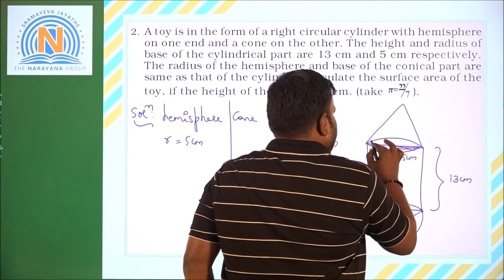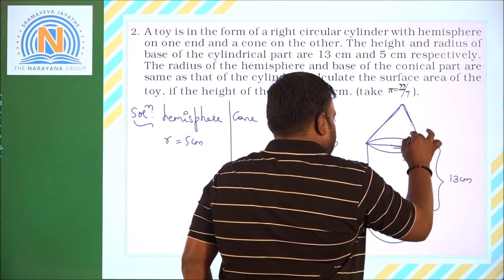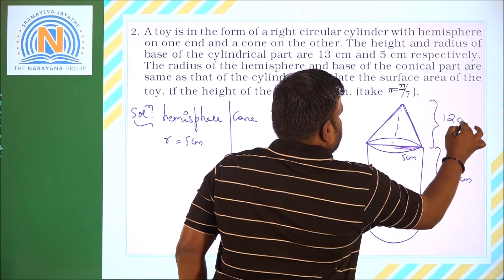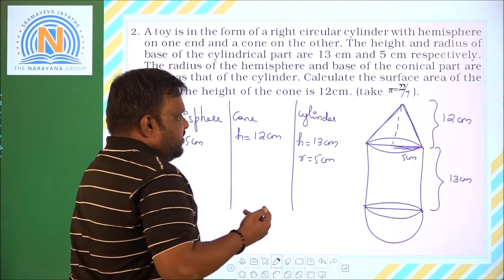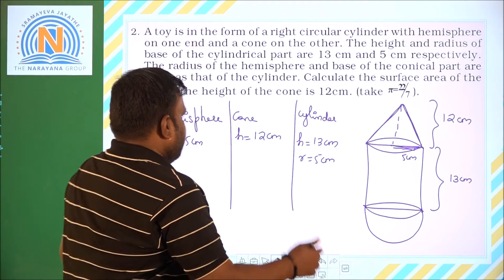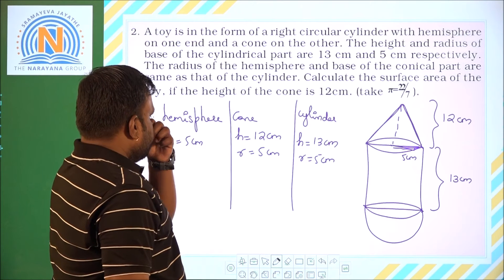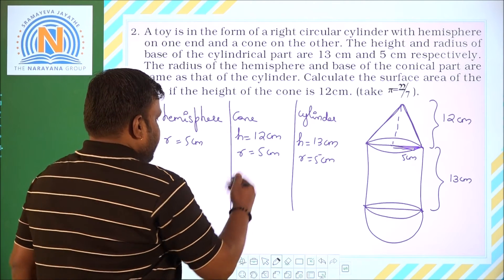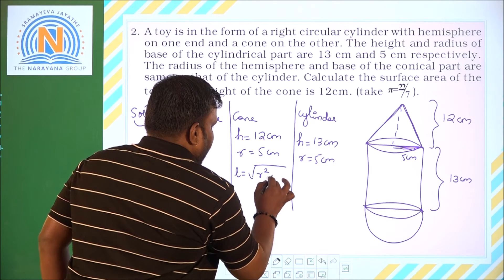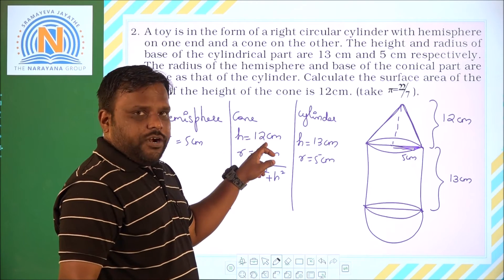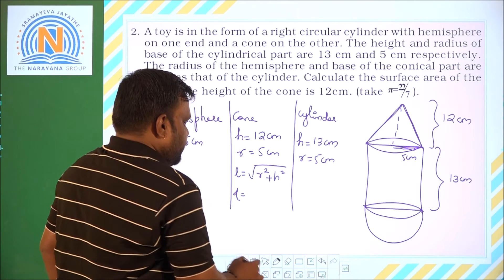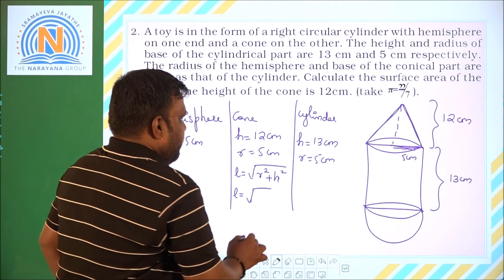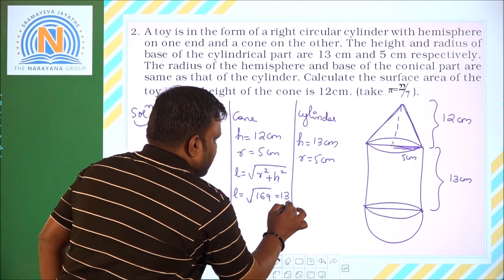Calculate the surface area of the toy if the height of the cone is 12 centimeters. Height of the cone is 12 cm. Since the cone is placed on the cylinder, radius is also 5. We need slant height L = √(R² + H²) = √(5² + 12²) = √(25 + 144) = √169 = 13 centimeters. So L is 13 cm.